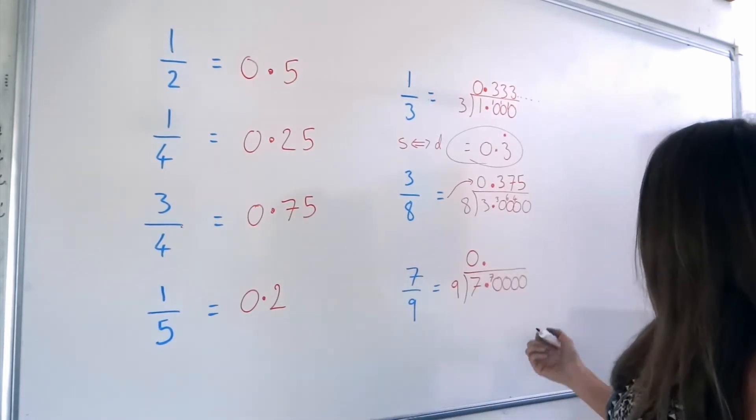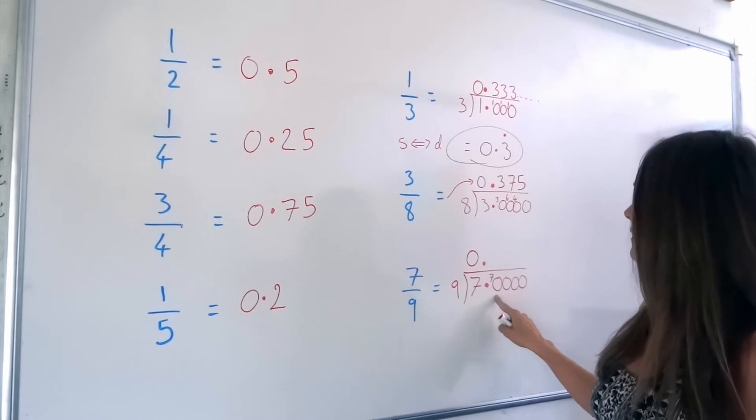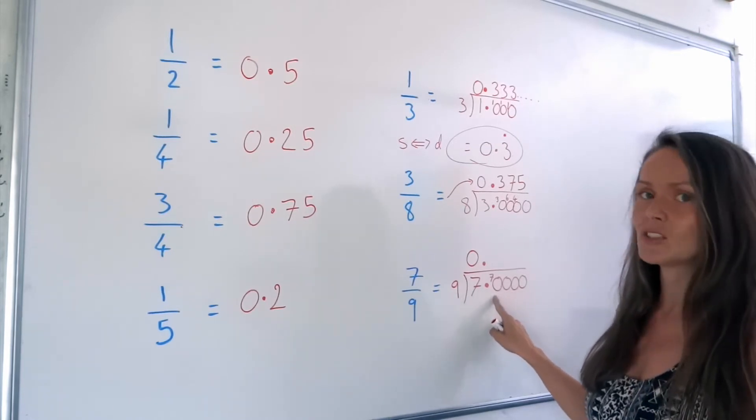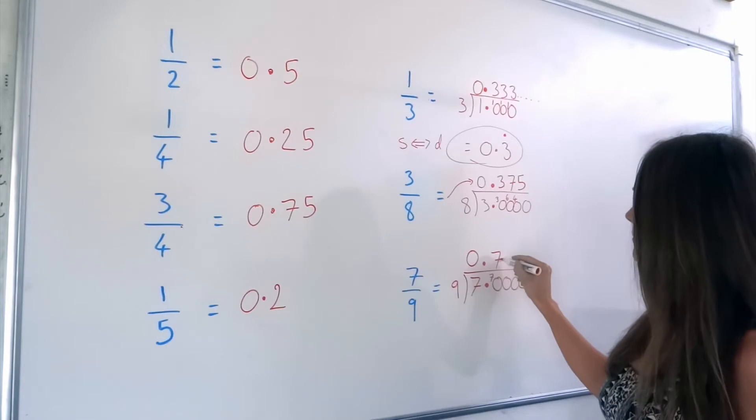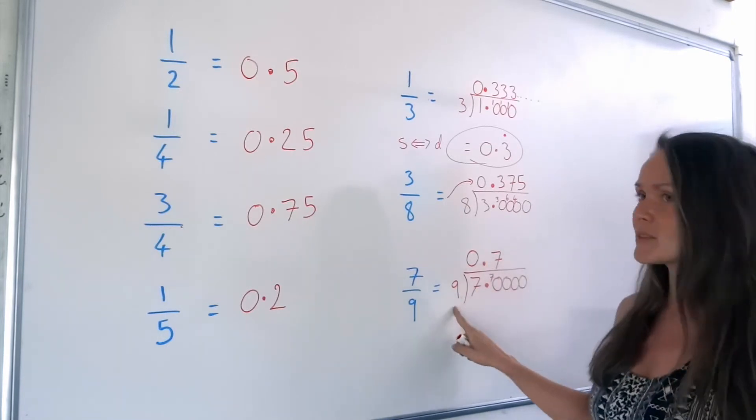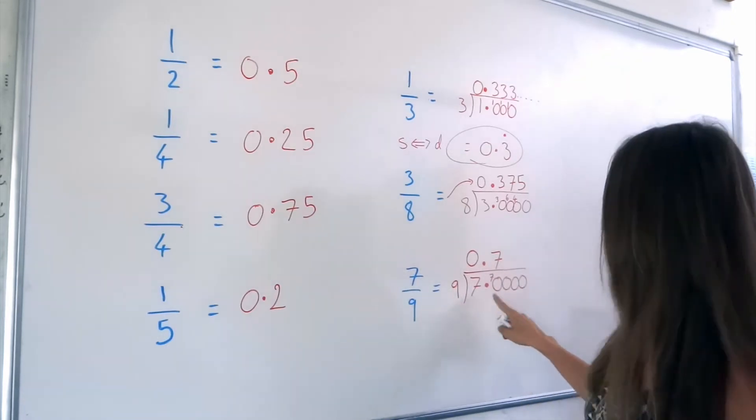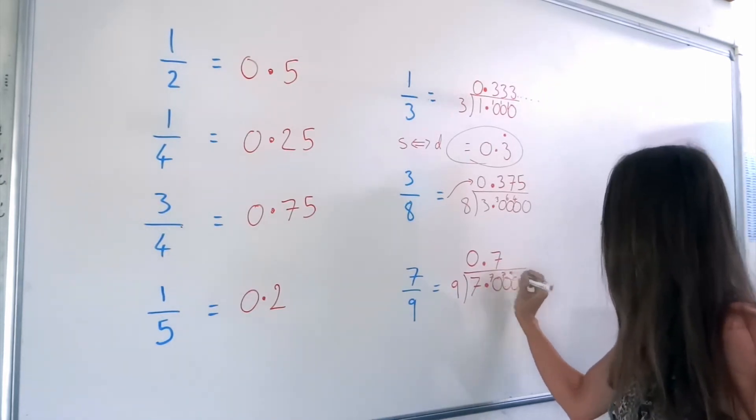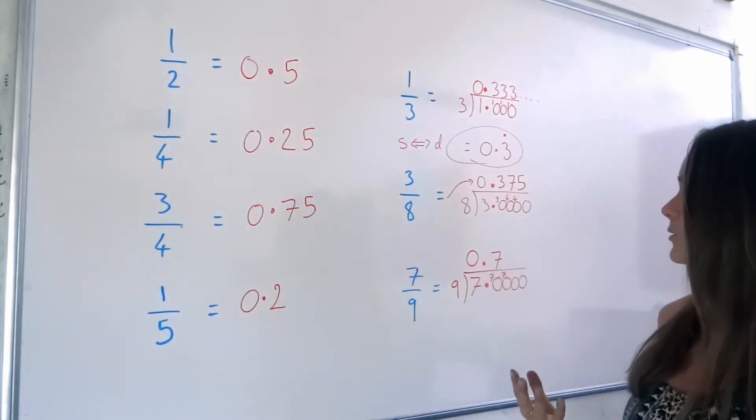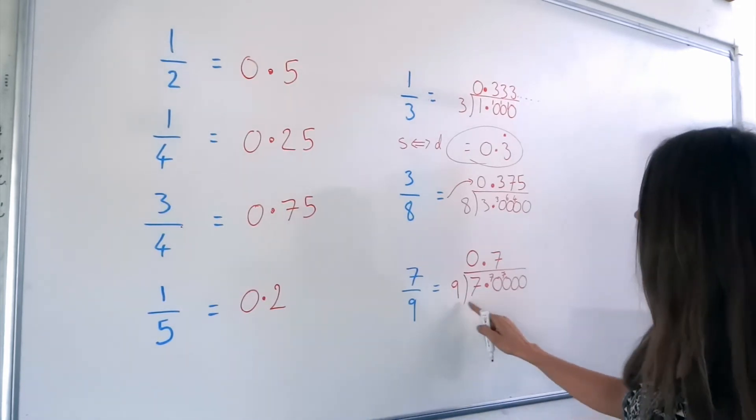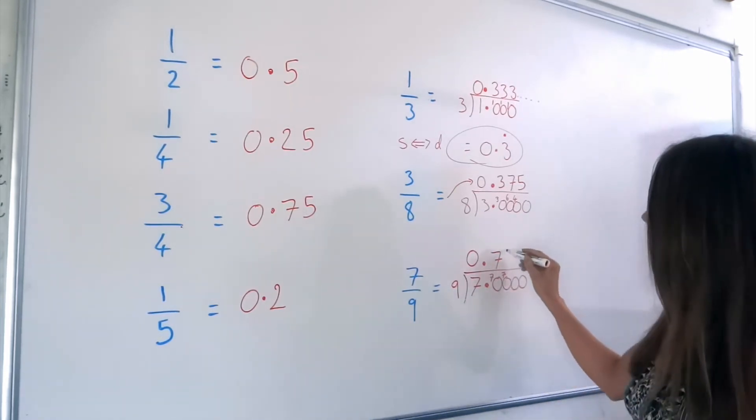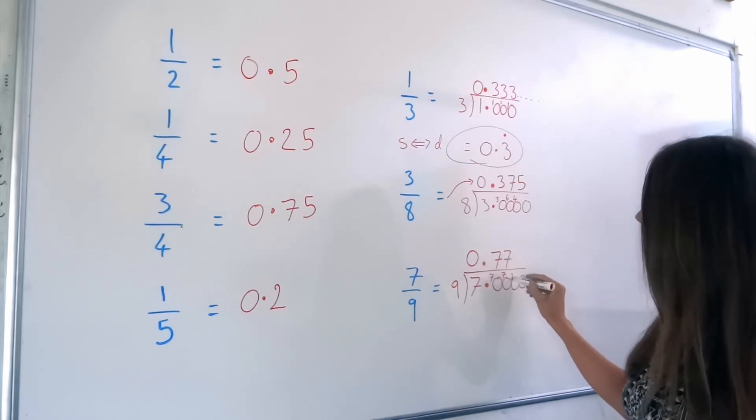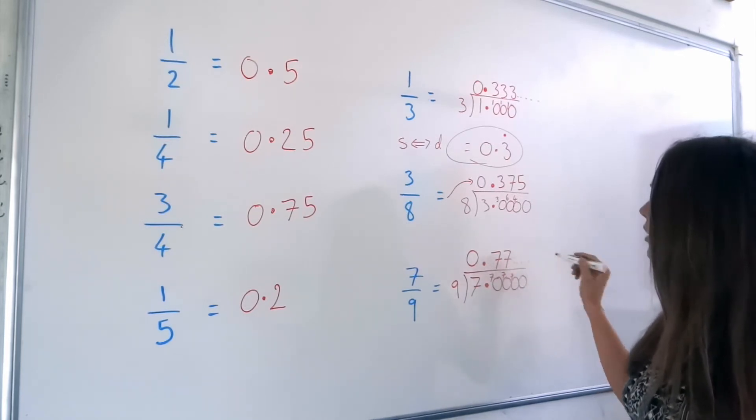So that 7 gets carried over there. How many 9's in 70? Well, 8 times 9 is 72, so that's too big. So it goes 7 times. And because 7 times 9 is 63, and we've got 70, there's a remainder of 7. Now, same question again. How many 9's in 70? Well, the same. It's still 7, with a remainder of 7. So those 7's keep going.